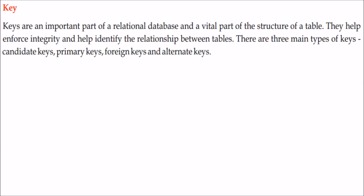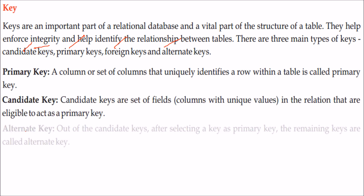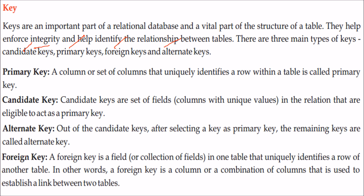Keys play a vital role in a database — to structure the table, combine tables, enforce integrity, or identify relationships between tables. There are mainly four types of keys: candidate key, primary key, foreign key, and alternate key. We will explore what each of these means.